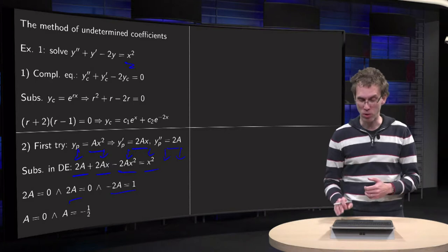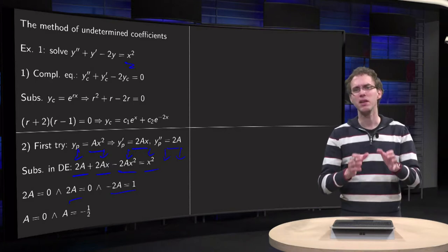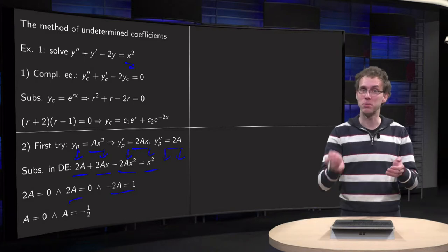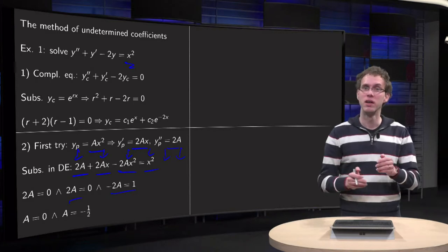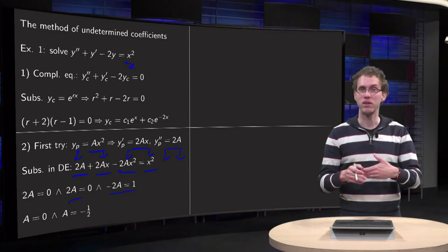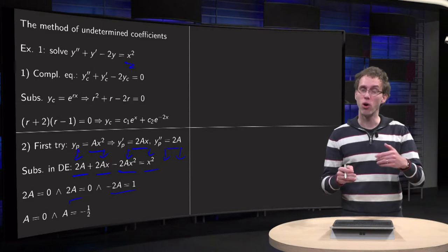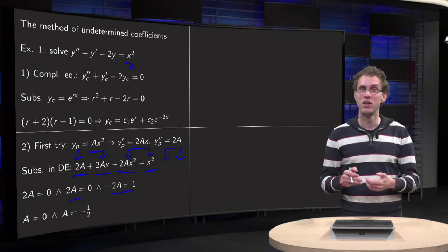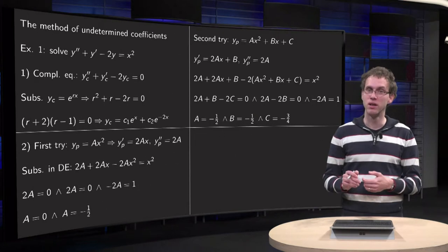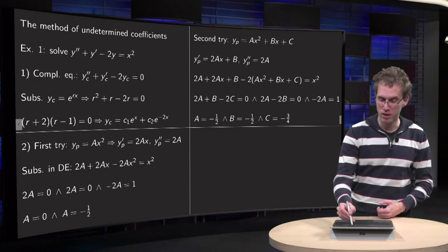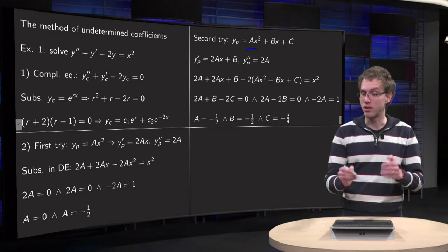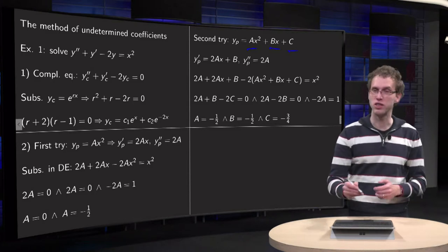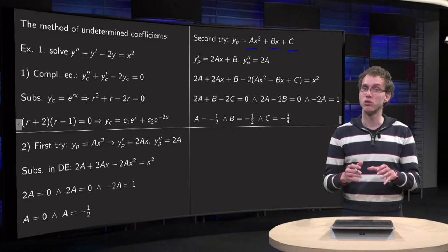Something went wrong. What went wrong? Our initial guess was yp = ax². But when you differentiate it and plug it into the differential equation, you always also get terms like x and constants. So a better guess would be not just ax², but also include bx plus some constant c, and see whether you can find a particular solution of this form.